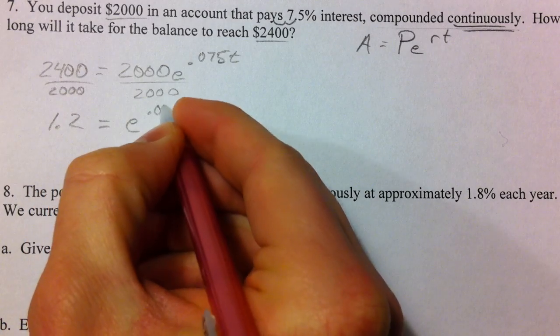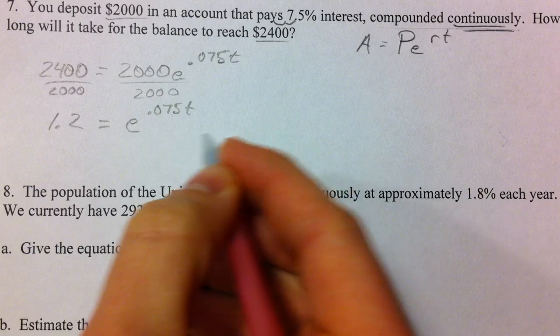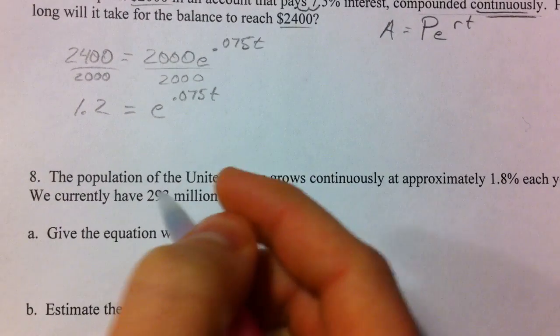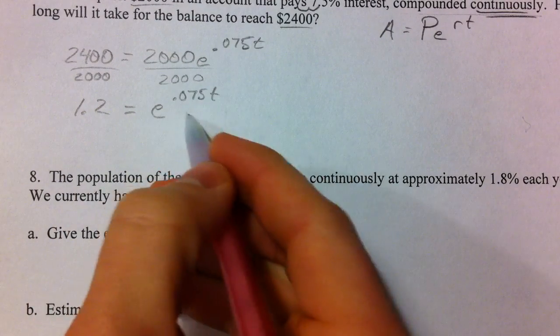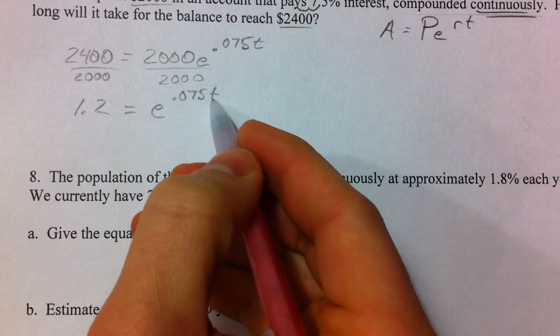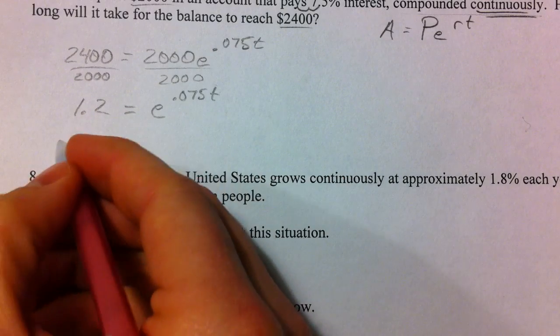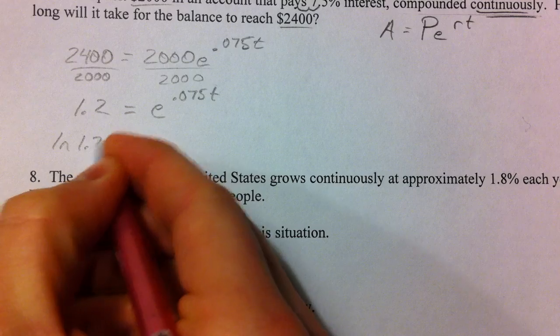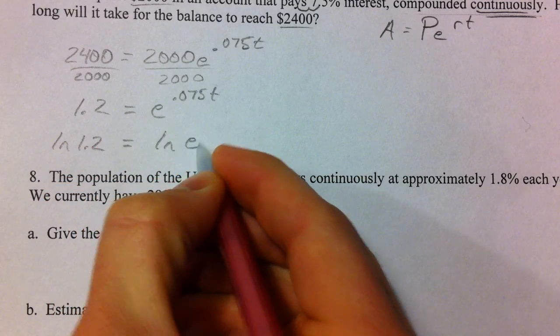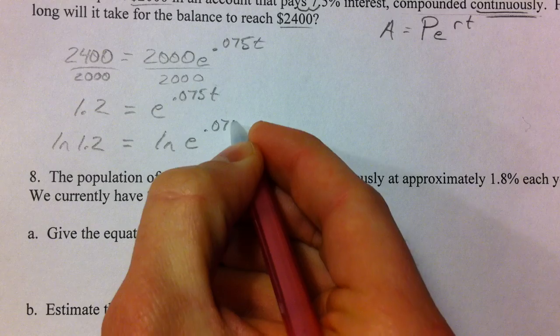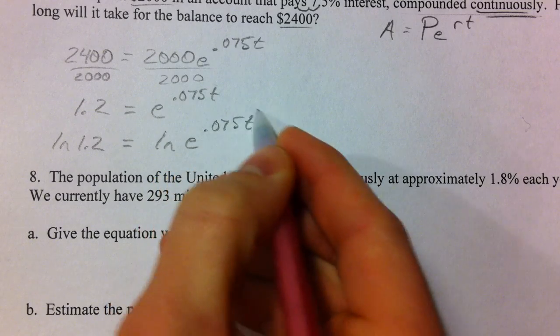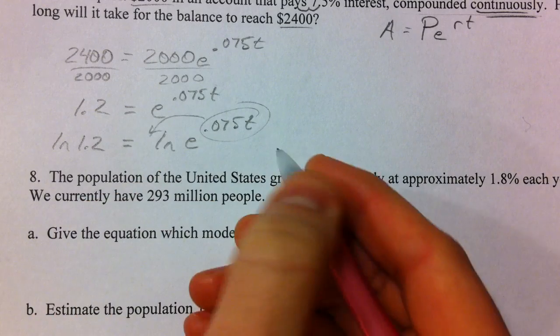We get 1.2. E to the 0.075T. Take the natural log of both sides. To get the T out of an exponential part, you have to do the inverse of it by taking the natural log of both sides. 0.075T. The whole reason we did it, that comes down in front.